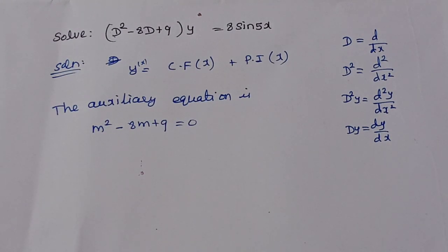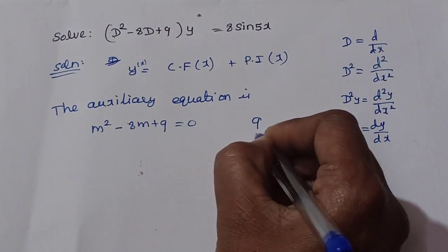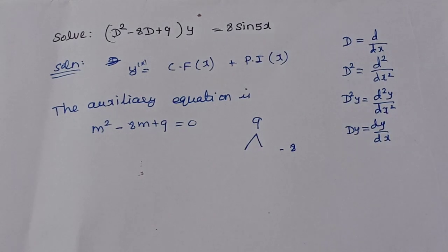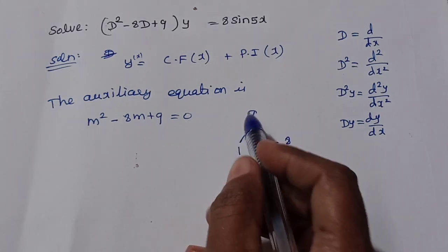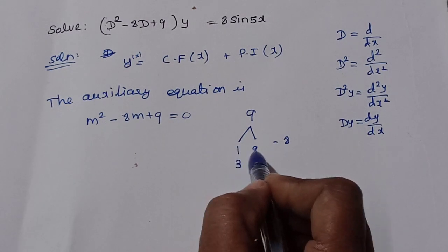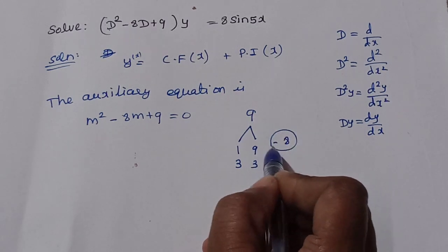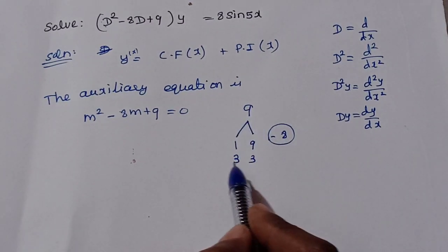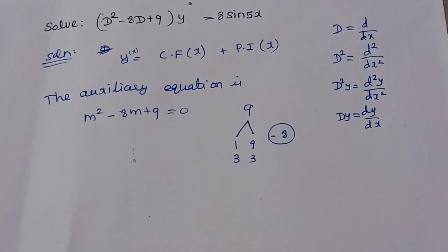For this second order equation we solve for two roots. The equation is m² minus 8m plus 9 = 0. We check factors: 1 × 9 = 9, and we need two numbers that multiply to 9 and add to minus 8. Trying minus 6 and minus 6 gives minus 12, not minus 8, so we cannot factorize directly.